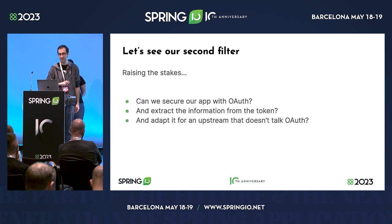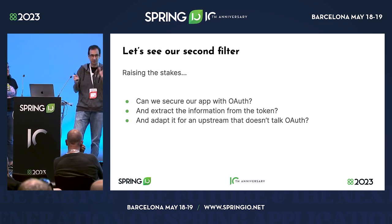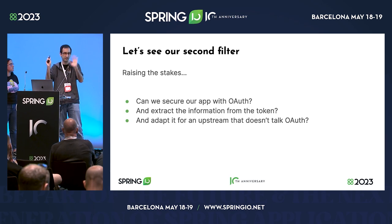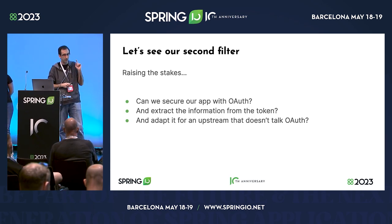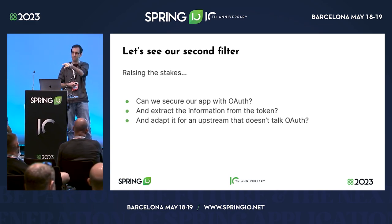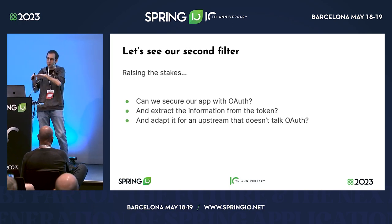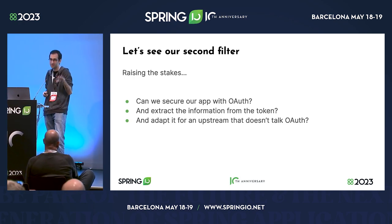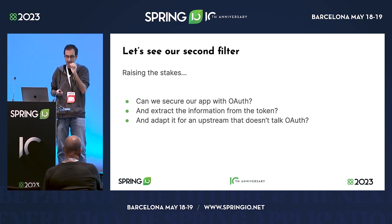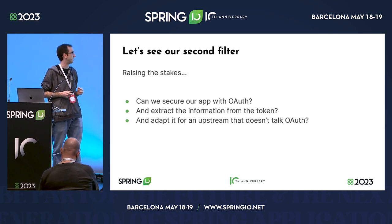Because we can do more things, let's raise the stakes. Who attended the morning session from Robert Winch about OAuth? That was an excellent talk. Let's say we have our app team service and we want to add security. For the reasons Robert explained, we want to add OAuth because tokens are more secure and more performant.